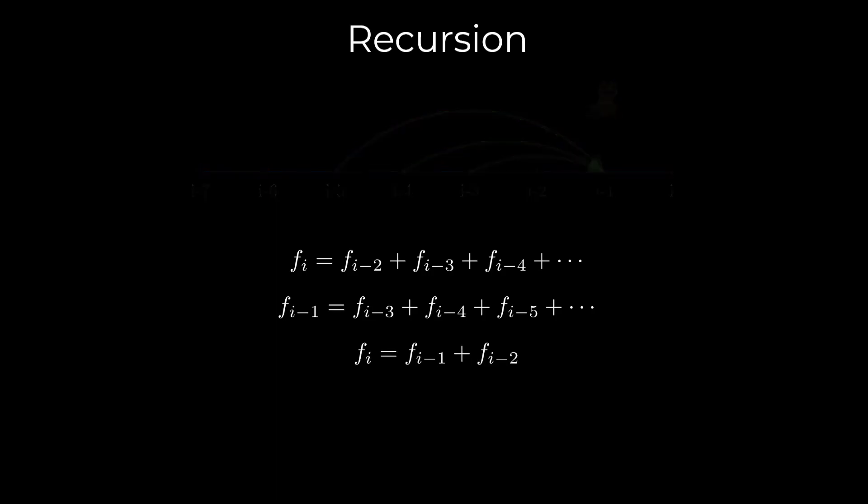Note that the frog starts at 0. Since it is already there, there is exactly one way to be at 0 and hence f0 is 1. However, on the first move, the frog must jump beyond 1, meaning there is no possible way to reach 1. Hence f1 is 0. Using the recursive formula along with these base conditions, we find that f10 is 34.